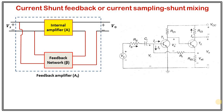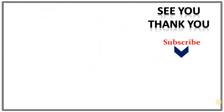To summarize: at the output, if the connection is in shunt form we are sampling voltage, and if the connection is in series form we are sampling current. For the input side, if the connection is shunt then it is shunt mixing, and if the connection is series then it is series mixing. In the next lecture I will discuss the advantages of negative feedback and see how input impedance, output impedance, noise, distortion, and many other parameters change with feedback.